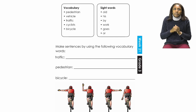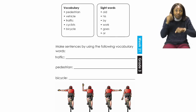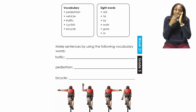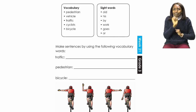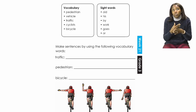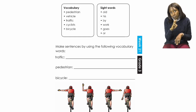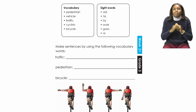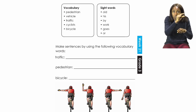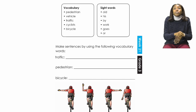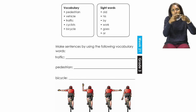So if you become a cyclist, these are the things that you have to know. Now that we know our vocabulary words, let's move on to our sight words. We have the words: old, his, by, work, goes, and or. It's now going to be your job to make sentences using the following vocabulary words: traffic, pedestrian, and bicycle.